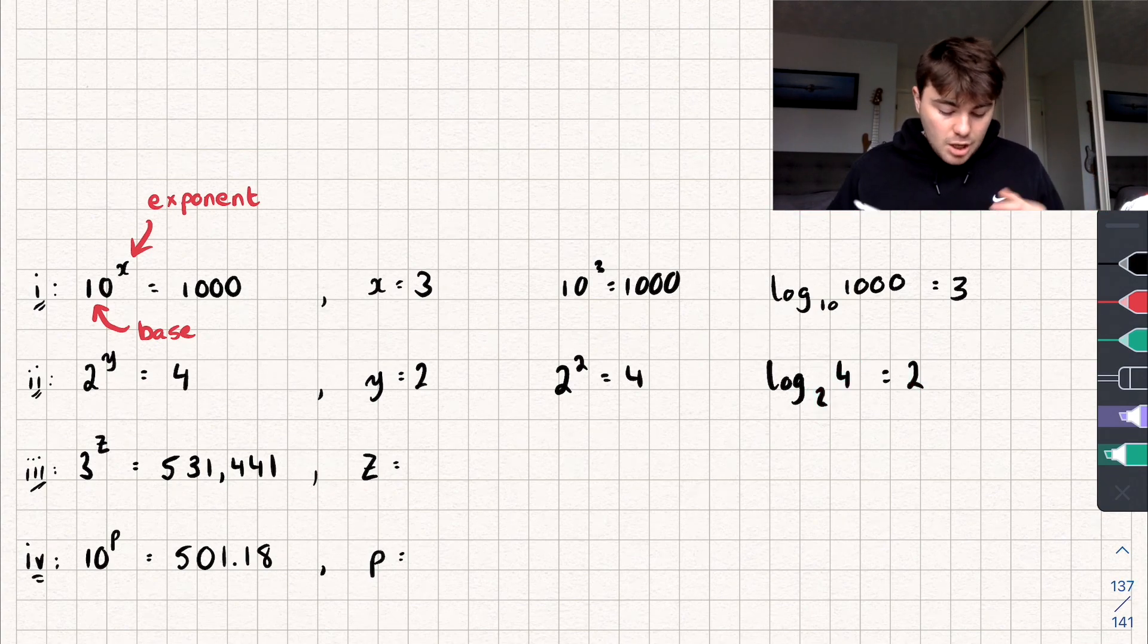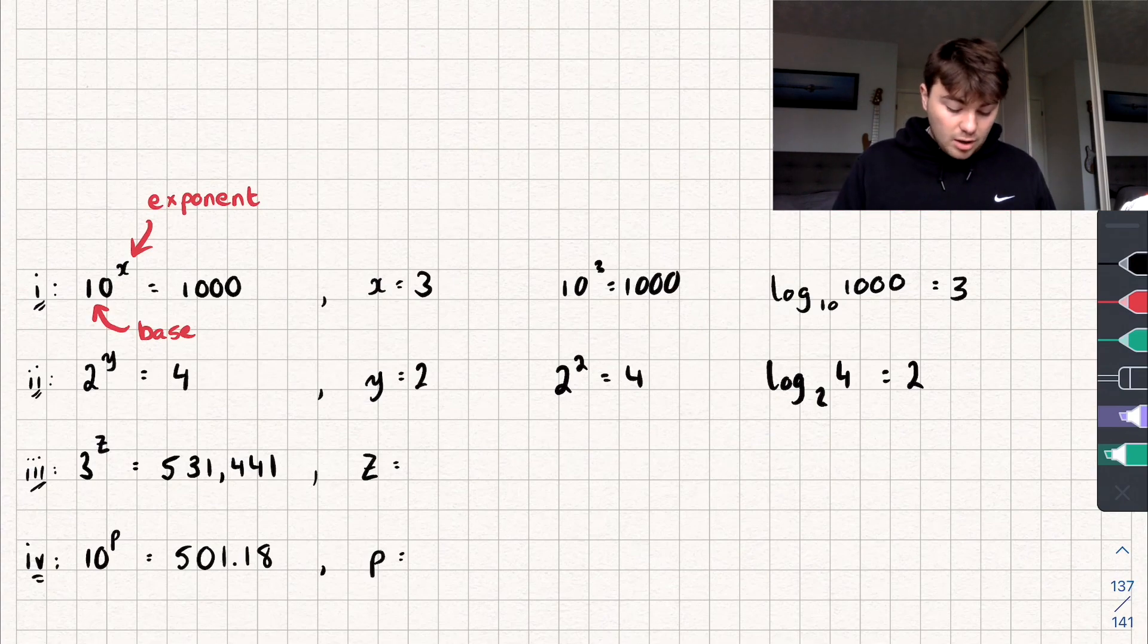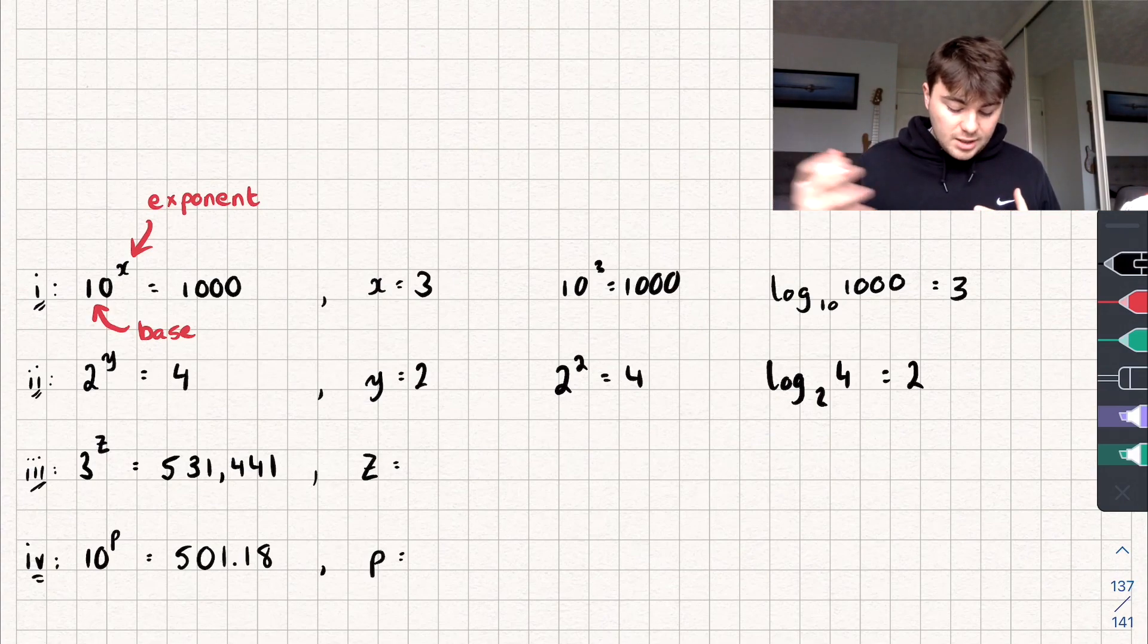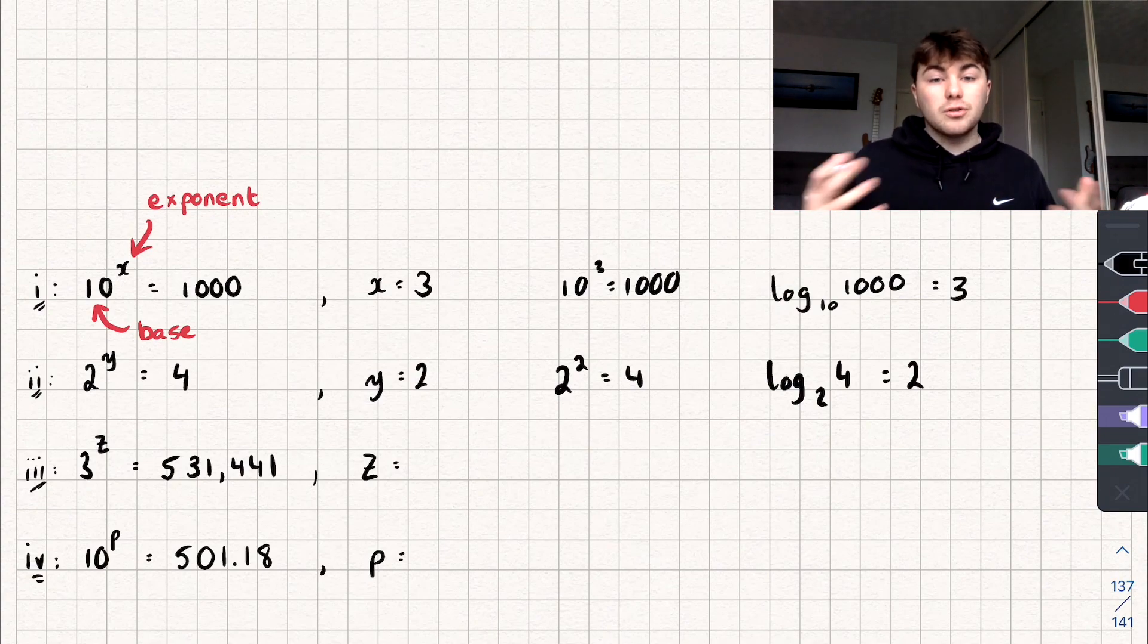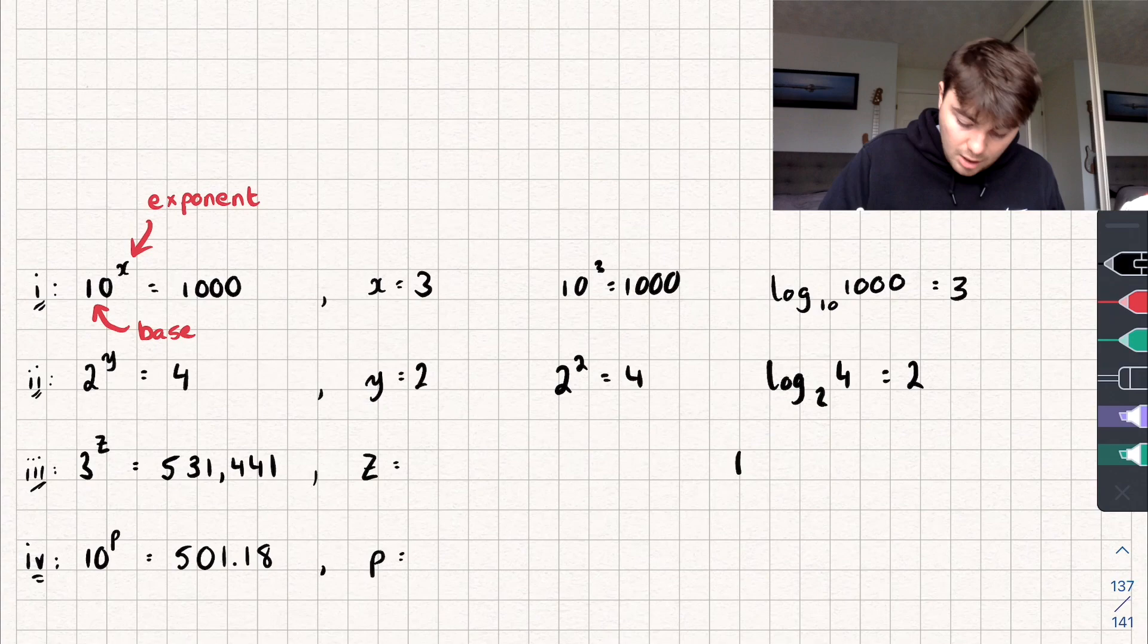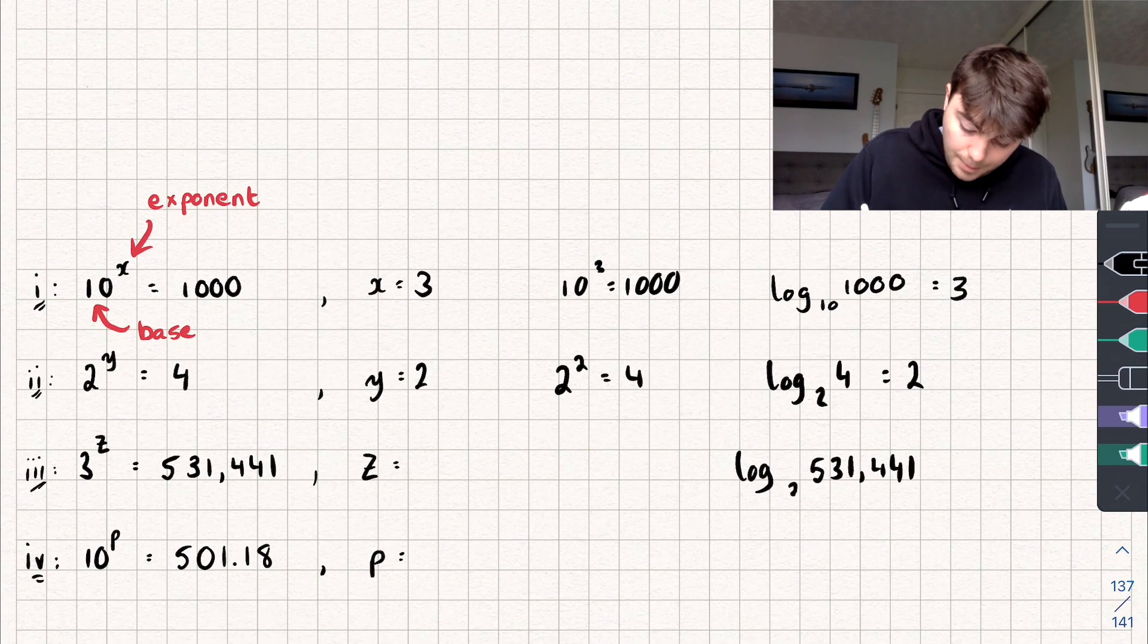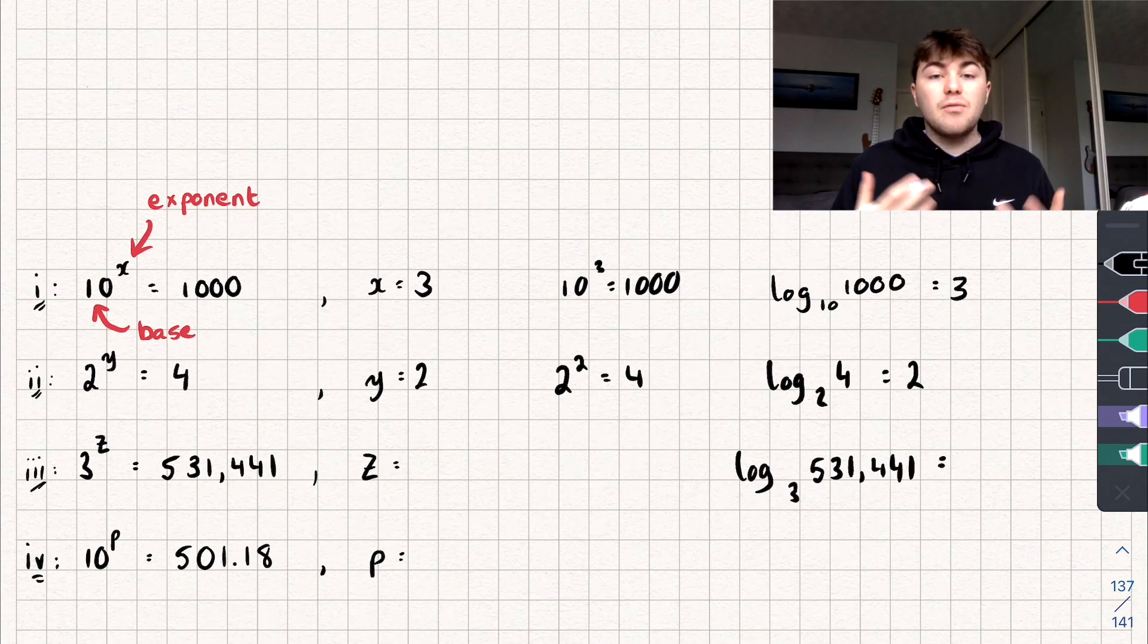Here's how we're going to use logarithms to answer question 3. We're saying 3 to the power of z is 531,441. If I wrote that in terms of a logarithm, we would say the log of 531,441 base 3, well what is that equal to? And whatever that is equal to will give me the value of z.